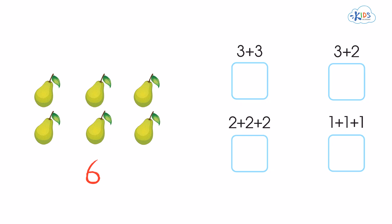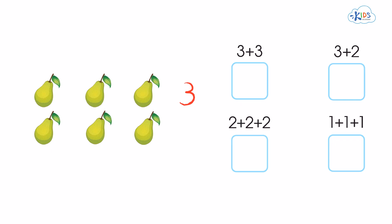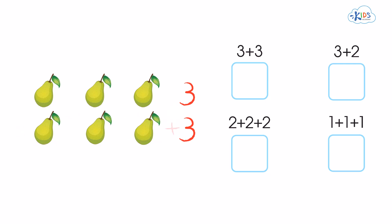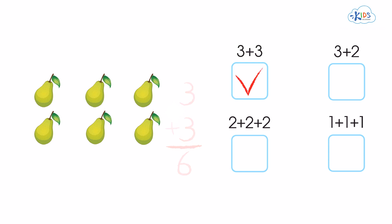Let's see what easy addition sentences we can find to make six from this picture of pairs. First, let's count the top row across. One, two, three — there are three pairs. Now let's count the bottom row across. One, two, three — there are also three pairs on the bottom. So we can add three plus three and we would get a total of six, which is the correct number of pairs. Three plus three is a good representation of this picture and the number six. Let's put a check in the three plus three box.